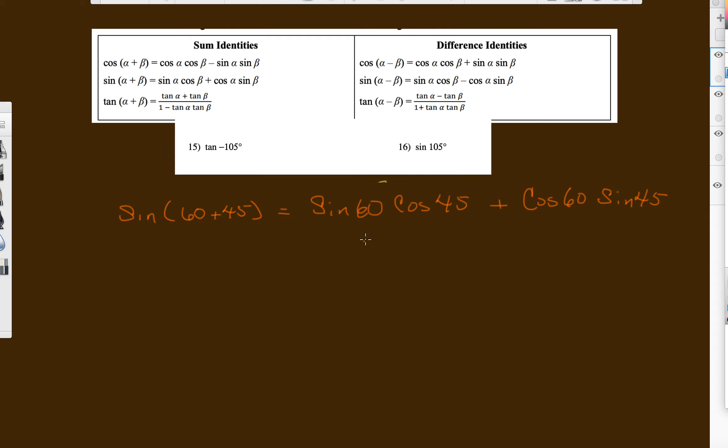We should know all these. Sine of 60 is root 3 over 2 times root 2 over 2. We're going to add to it. Cosine of 60 is 1/2, and times root 2 over 2.